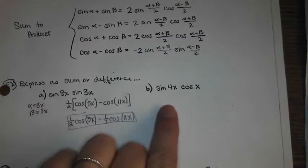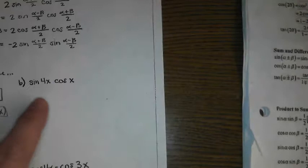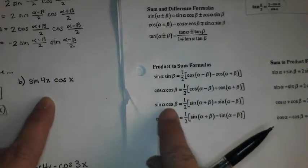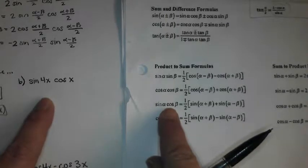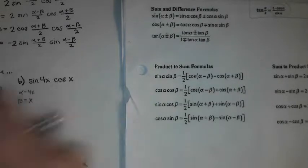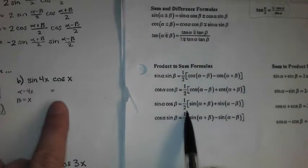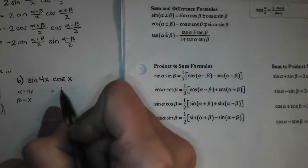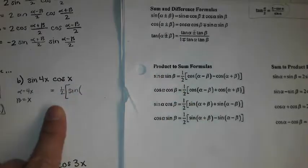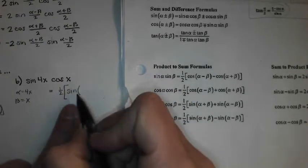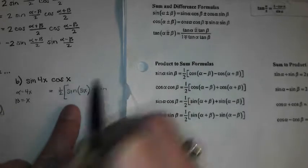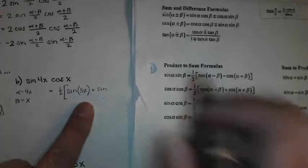So the second one, sine times cosine. So if I look at my product, sine times cosine is the third one down. What's my alpha? What's my beta? X. So my equation is going to be one half, brackets, sine of, what's my alpha plus beta in this case? 5x. Plus my sine of what's alpha minus beta, 3x.